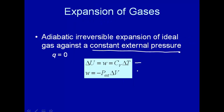So the two ways to calculate the change in internal energy, it's heat capacity at constant volume times the change in temperature, or pressure times the change in volume, when you have an adiabatic irreversible expansion at constant external pressure.